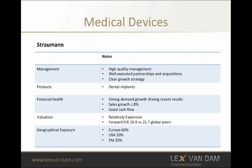We'll kick off with the first company using the five factors for company analysis. The first company is called Straumann, which is based in Europe. It's a leading provider of dental implants in Europe and also has operations in China, India, Russia, and Latin America.